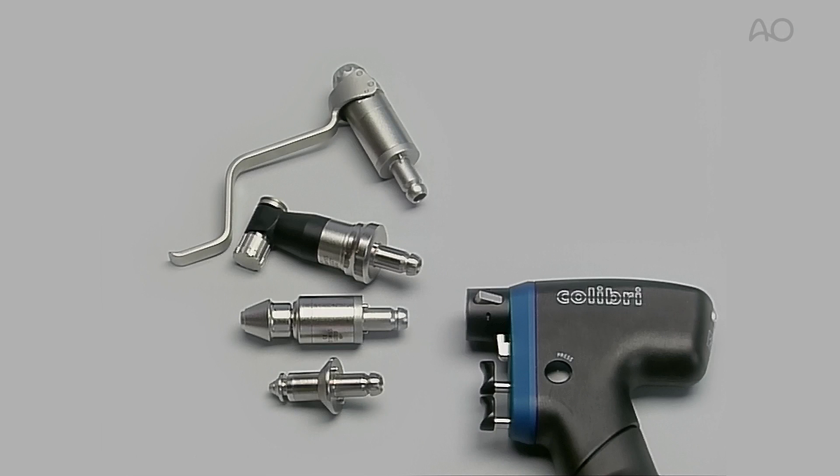The four main attachments for use on small bones are the mini quick coupling, the standard quick coupling, the oscillating saw attachment, and the quick coupling for Kirshner wires.